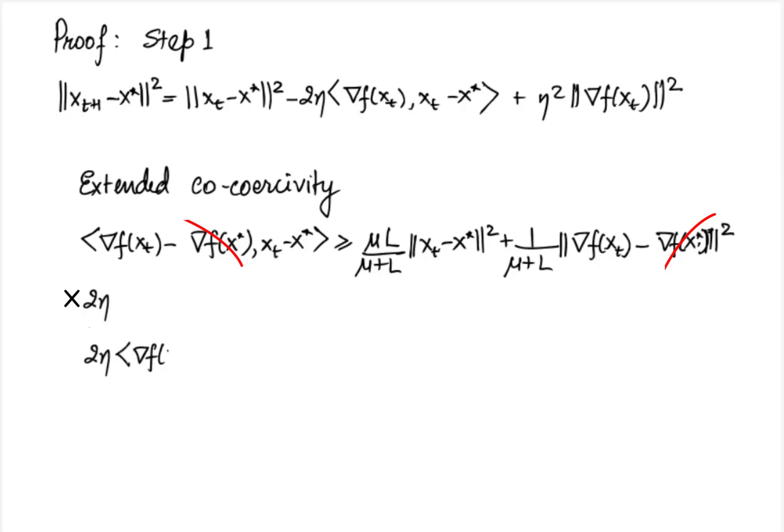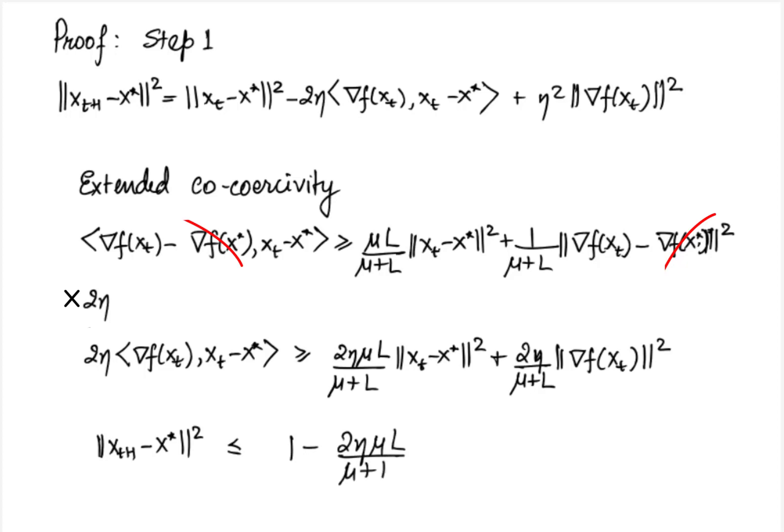So as to get 2 eta times gradient f x t inner product with x t minus x star greater than or equal to 2 eta mu l by mu plus l x t minus x star norm square plus 2 eta by mu plus l gradient norm square. Adding these two inequalities and canceling some of the terms we obtain the required one step inequality as x t plus 1 minus x star norm square less than or equal to 1 minus 2 eta mu l by mu plus l norm square of x t minus x star plus eta times eta minus 2 by mu plus l norm square of gradient f x t.